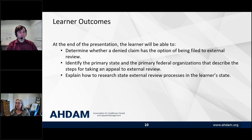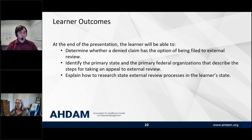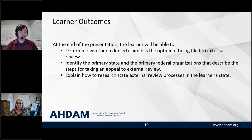Let's get into our learner outcomes. At the end of the presentation today, the learner should be able to determine whether any particular denied claim has the option of being filed to external review — understanding which claims can go to external review and which ones may not. You should also be able to identify the primary state and federal organizations that describe the steps for taking an appeal to external review, so you can do the research in your state. And explain how to research the state external review process in your own state.